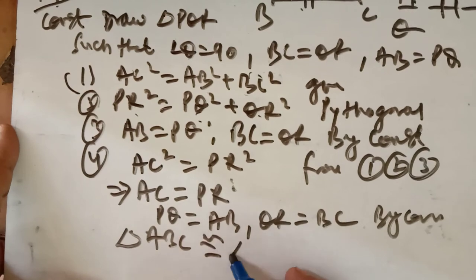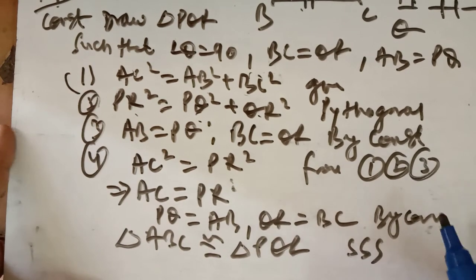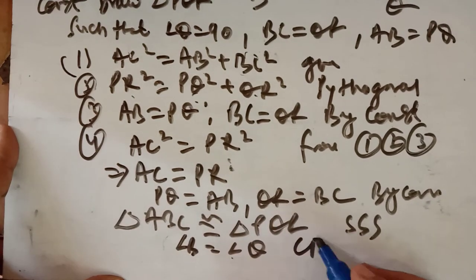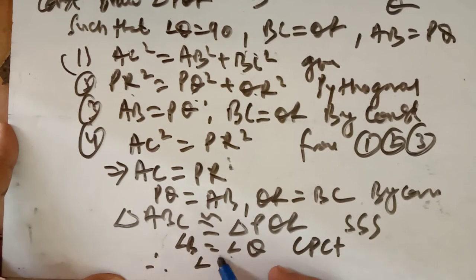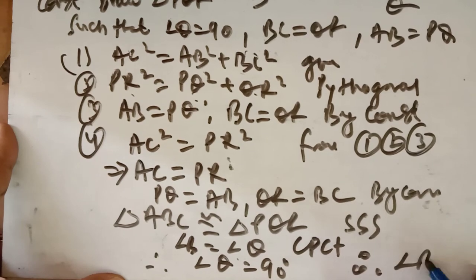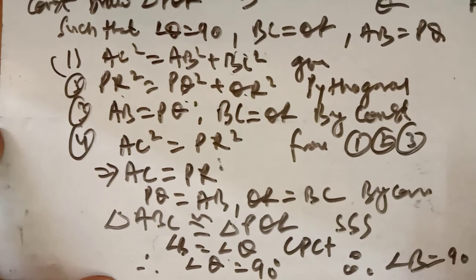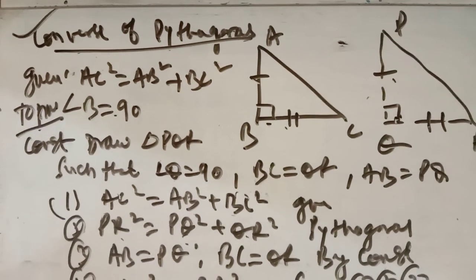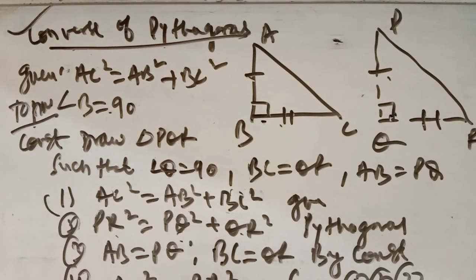Therefore angle B equals angle Q — corresponding parts of congruent triangles are equal. And angle Q is 90 degrees. Therefore angle B equals 90 degrees, which is what we had to prove. This is the converse of the Pythagoras theorem. Its statement is: if in a triangle the square of one side is equal to the sum of the squares of the remaining two sides, then the angle opposite to the first side is a right angle. We will continue in the next lecture. Thank you.